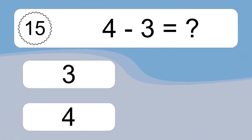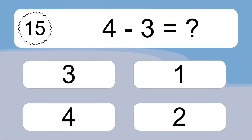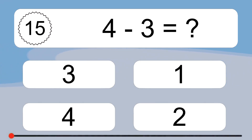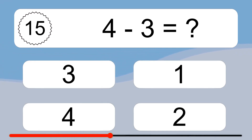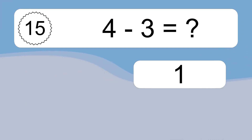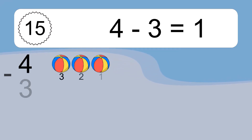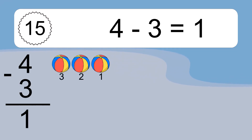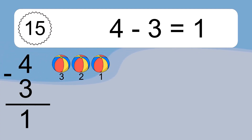4 minus 3 equals what? 4 minus 3 equals 1. Let's count it: 3, 2, 1.